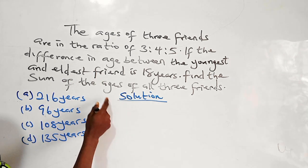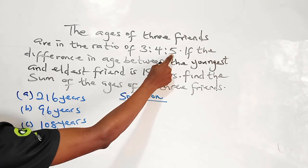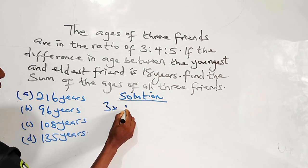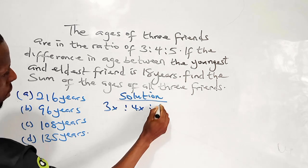So from the question here, we are having 3 ratio 4 ratio 5. So let us assume these 3x, 4x and 5x. This is the first friend, this is the second friend, this is the third friend.